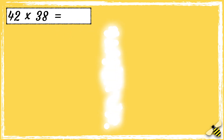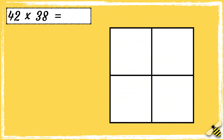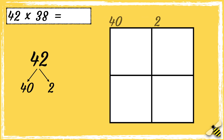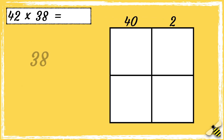Here is a number sentence: 42 times 38. Let's start by partitioning the number 42 — we have 40 and 2, so I'm going to put those numbers along the top of the box. Now let's partition the number 38 — we have 30 and 8, so we're going to put those numbers along the side of the box.